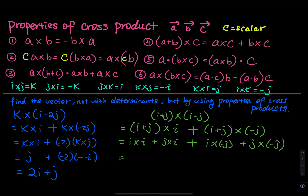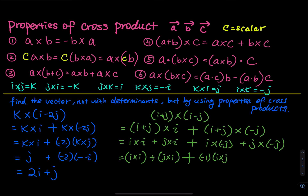The next step: we have (i cross i) plus (j cross i), then plus — pull a negative one out — times (i cross j), and pull a negative one out as well times (j cross j).